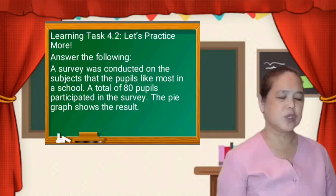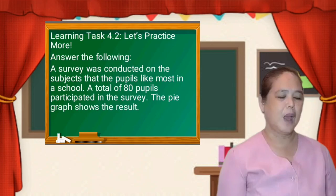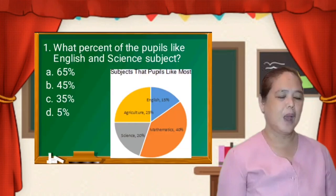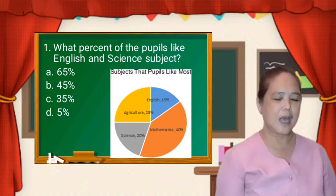For learning task 4.2, let's practice more. A survey was conducted on the subjects that the pupils liked most in a school. A total of 80 pupils participated in the survey. The pie graph shows the result. So let us answer number 1: what percent of the pupils liked English and Science? The choices are A) 65%, B) 45%, C) 35%, D) 5%. So you are going to add the percents: 15% and 20%. So 15% plus 20% is equal to 35%. The answer is 35%.